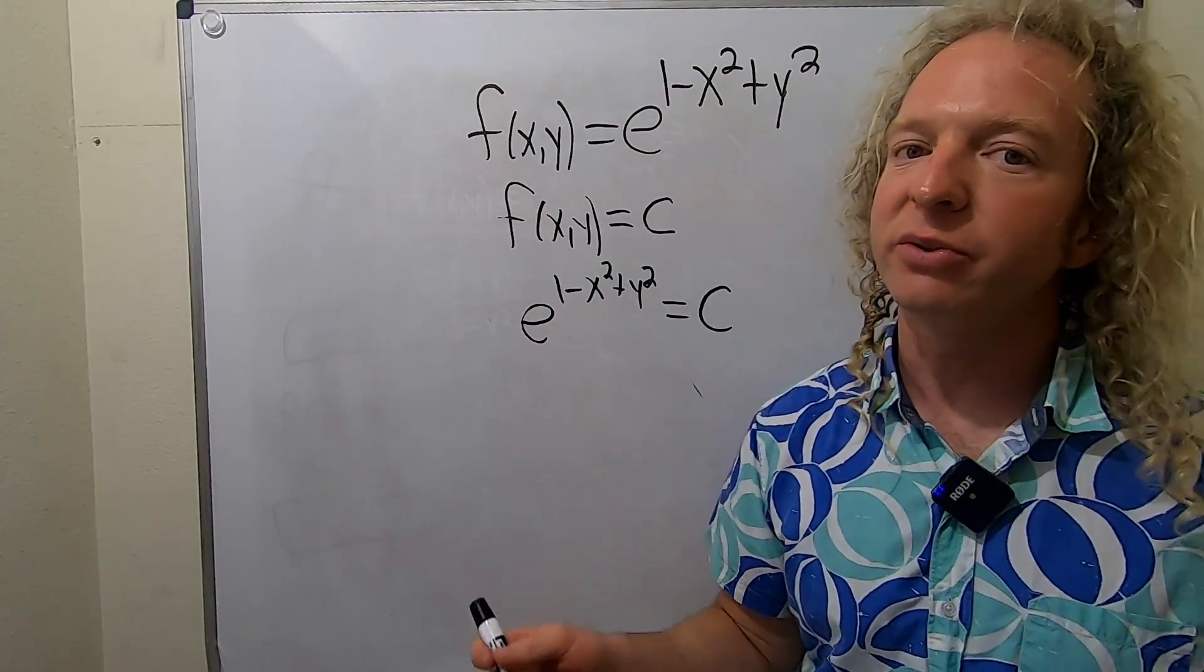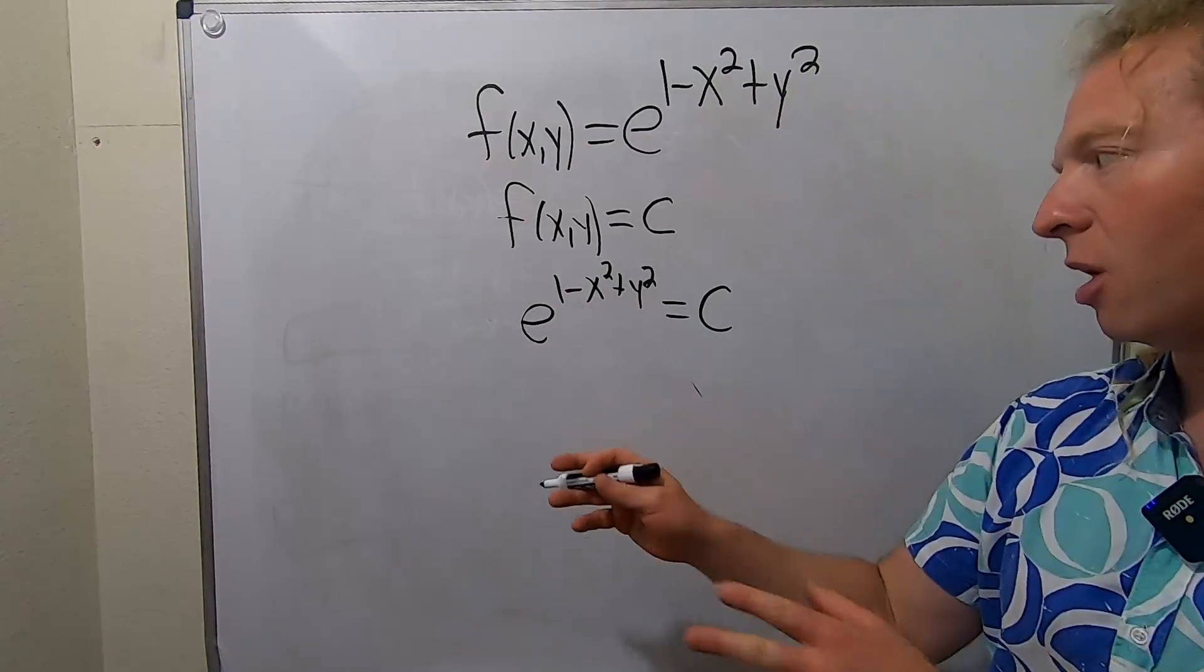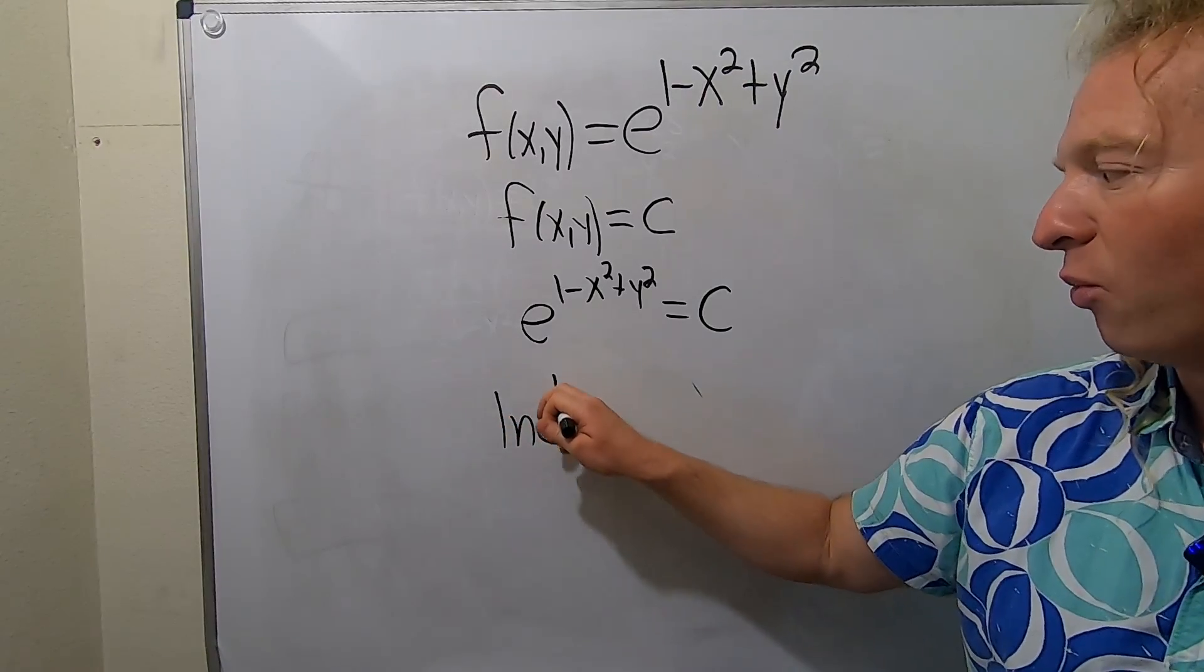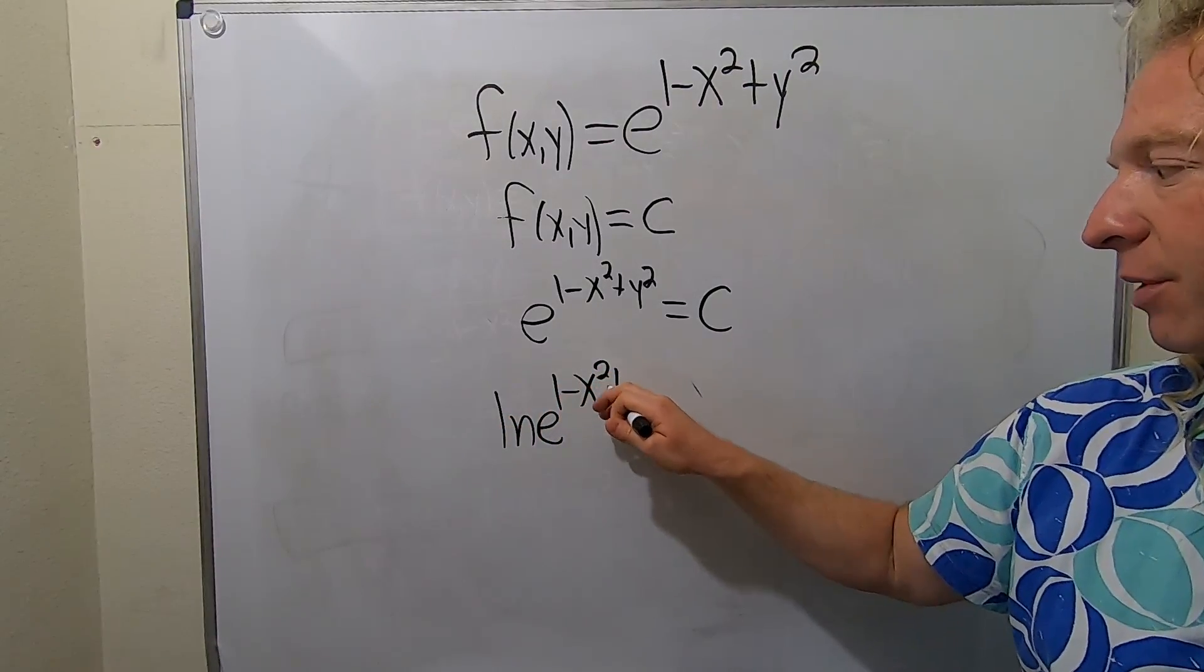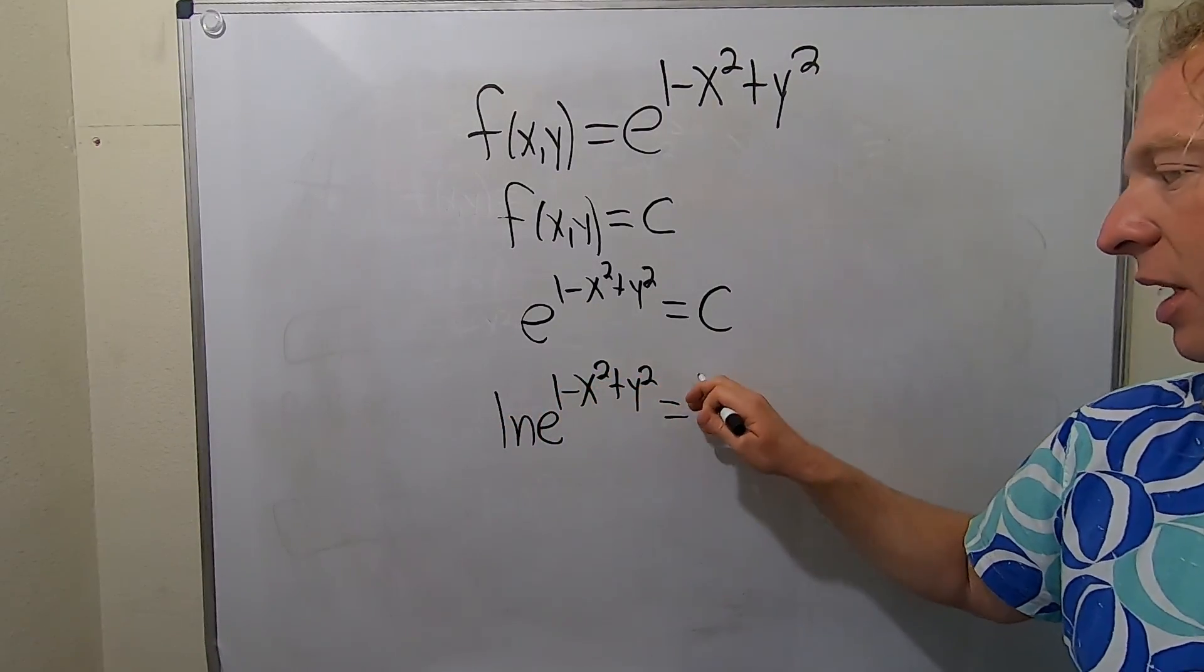Now we have an e here. So to get rid of the e, we can take the natural log on both sides. So we have ln e, 1 minus x squared plus y squared equals ln c.